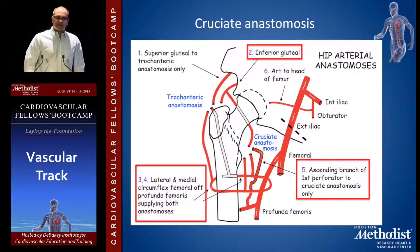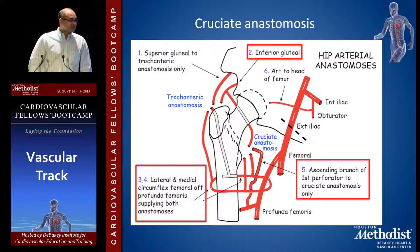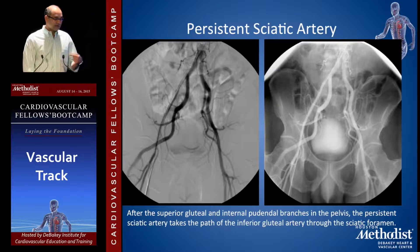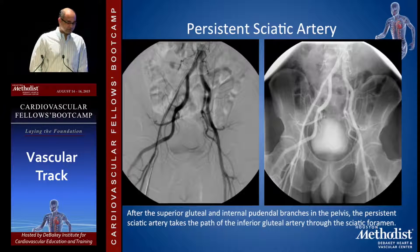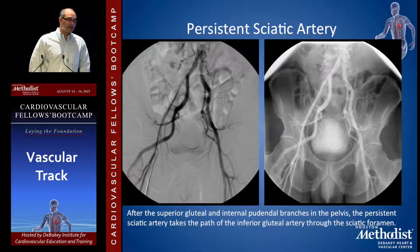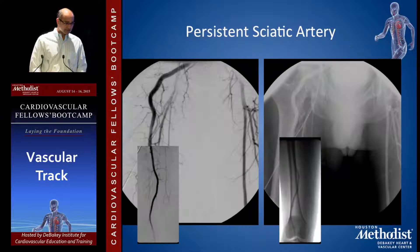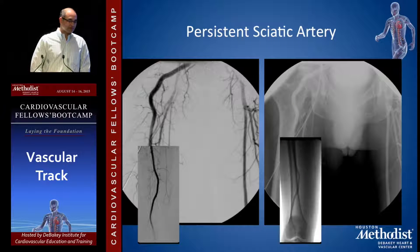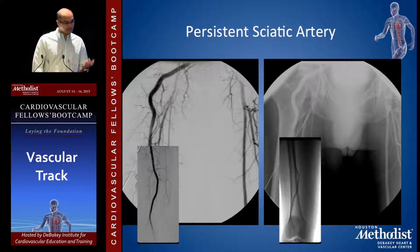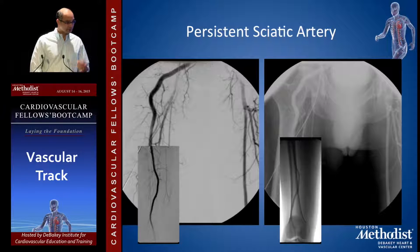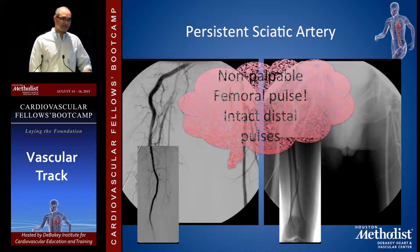A few anomalies to remember — they're not very common, but they frequently come up in case conferences. A persistent sciatic artery: after the superior gluteal comes off, the internal pudendal continues into the pelvis and becomes the sciatic artery, taking the path of the inferior gluteal artery through the sciatic foramen. In this patient, you will have palpable distal pulses but no palpable femoral pulse — because there is inflow into the leg, just not through the femoral artery.